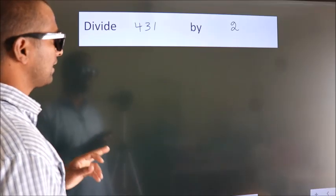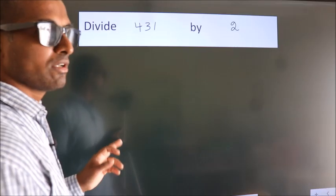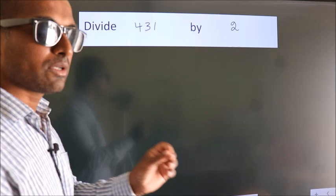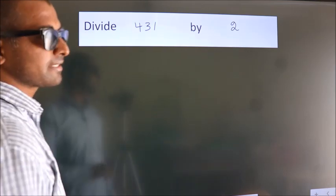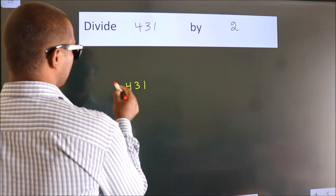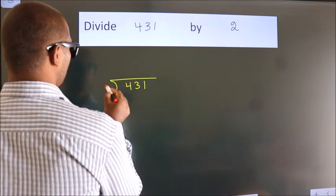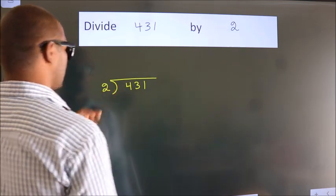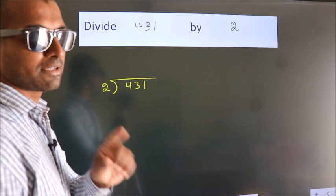Divide 431 by 2. To do this division, we should frame it in this way. 431 here, 2 here. This is your step 1.